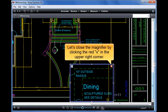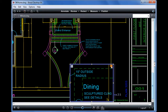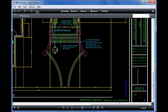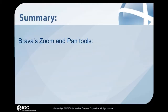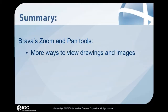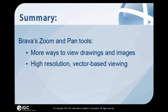Let's close the magnifier by clicking on the red X in the upper right corner. With Brava's zoom and pan tools, users have more ways to view drawings and images. Brava offers high resolution, vector-based viewing, and superior fidelity.